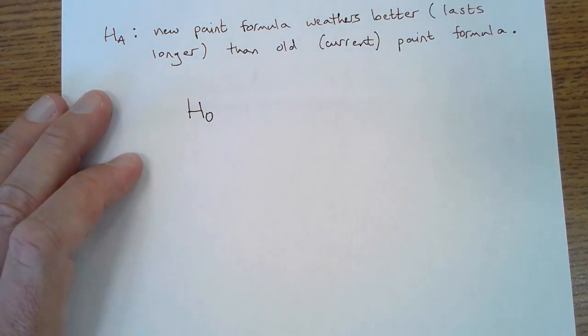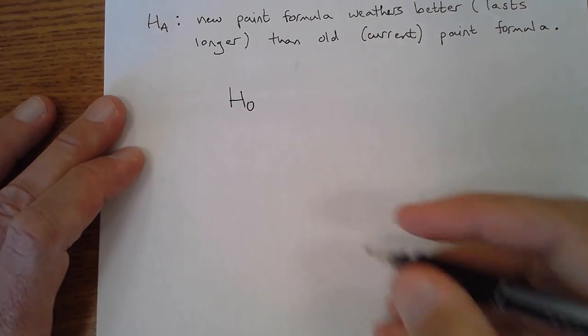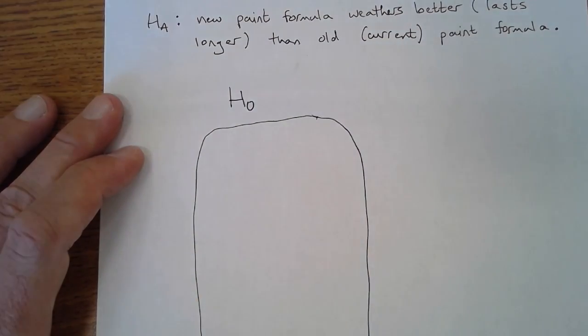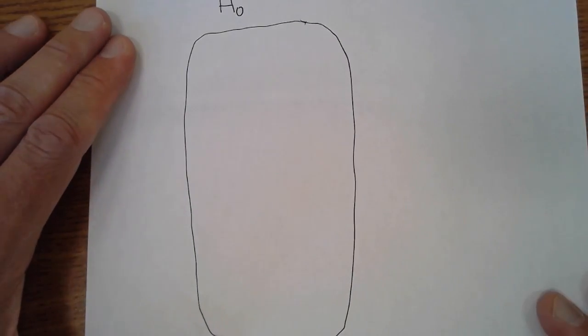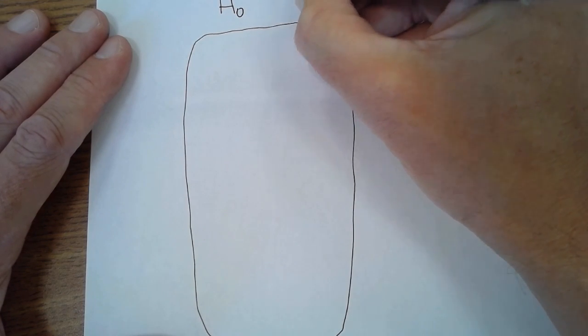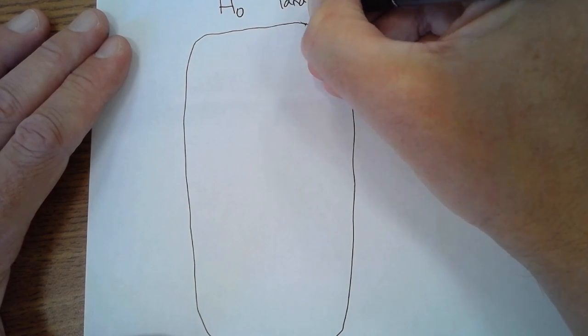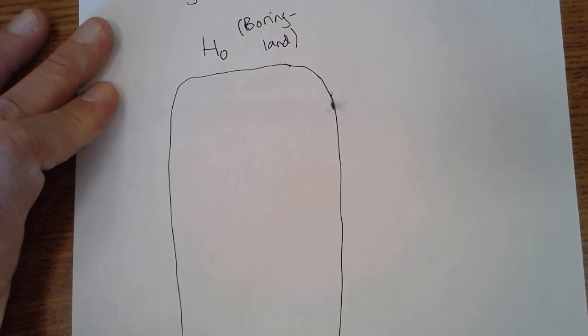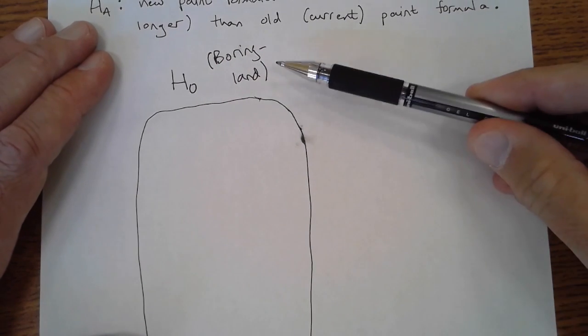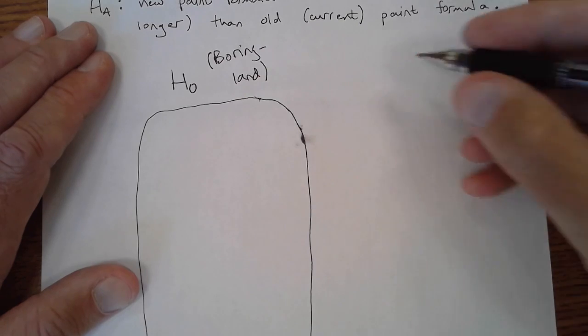If the null hypothesis is the reality, it means we live in a very boring country where there's really nothing interesting to be discovered. Nothing's there, and in the video this is called boring land. If the reality is, for example, that the two paints do just as well as one another, that's not really very interesting. We were hoping to find something more interesting than that.